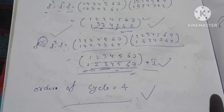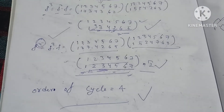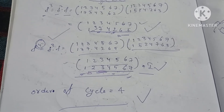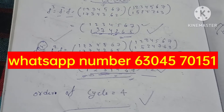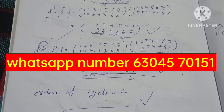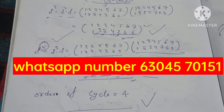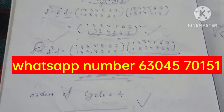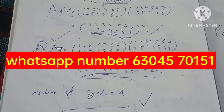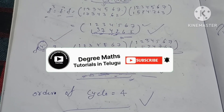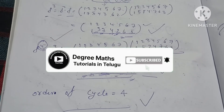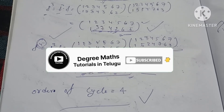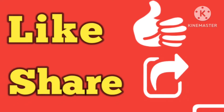Order of cycle is equal to 4. This is the solution. Please check Maths Notes. Post a WhatsApp message. Please post a message, post a video on our channel, like my channel, subscribe and support. Thank you.